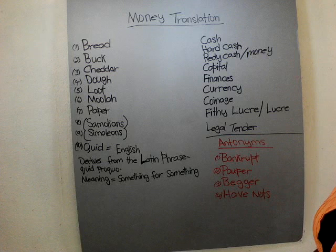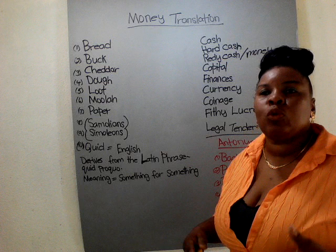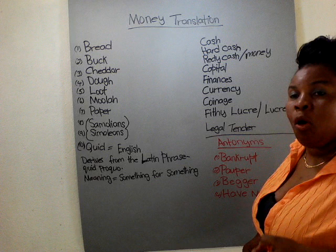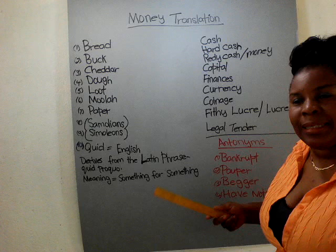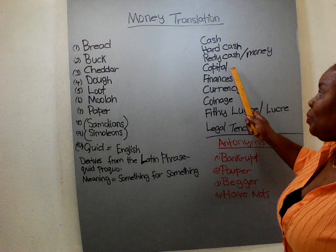Capital is mostly used when you're doing business or investments. So you put in the capital — whatever they consider the capital, that's the money they are talking about. Capital also means the main part of a country or a city. For example, the capital of Jamaica is Kingston. So it's spelled the same way.